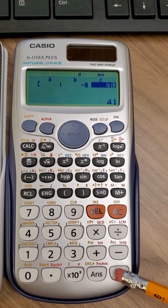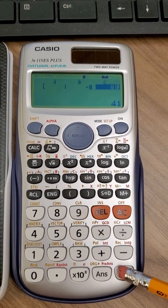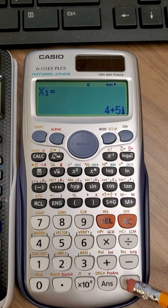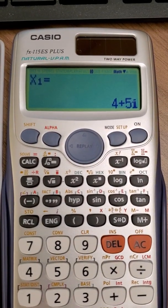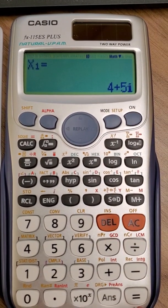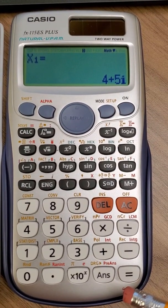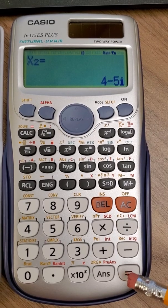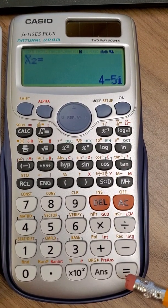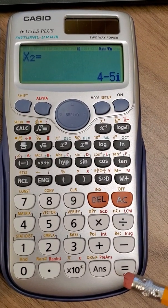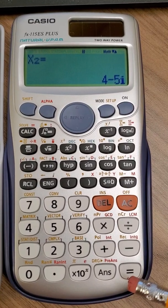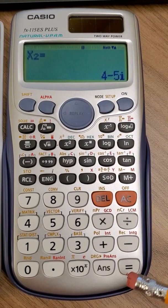And then if I hit equals one more time it's going to give me x2 which is 4 minus 5i. So that's the complex pair of solutions.